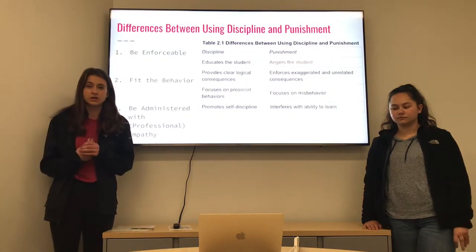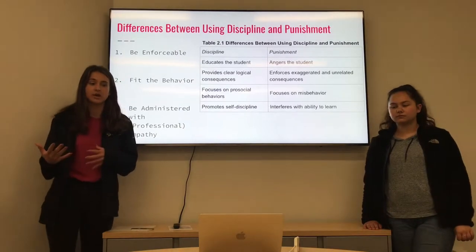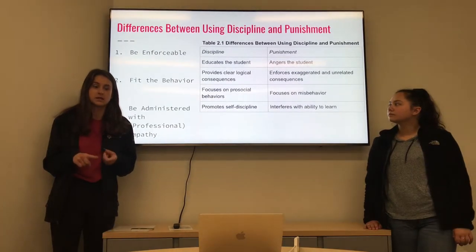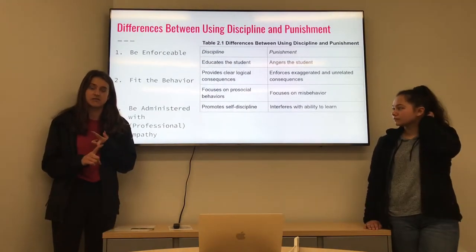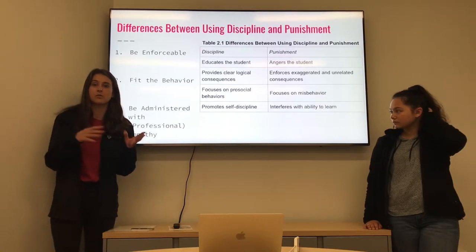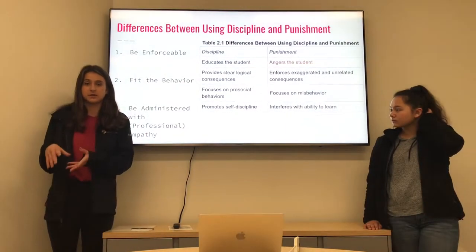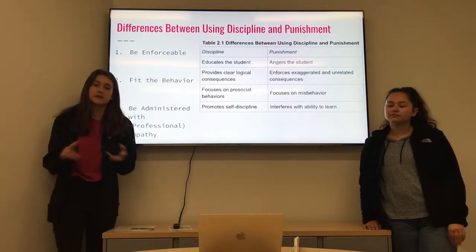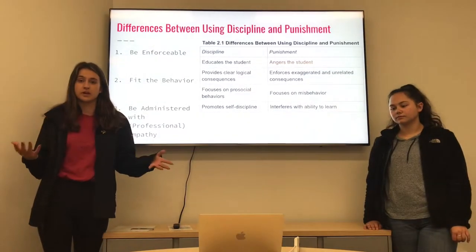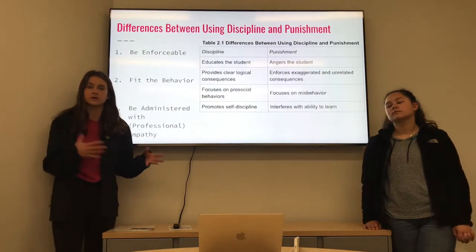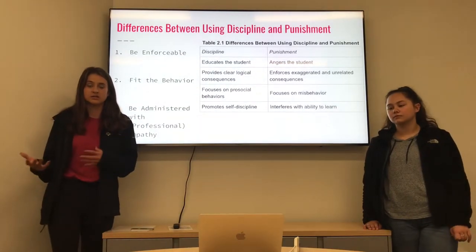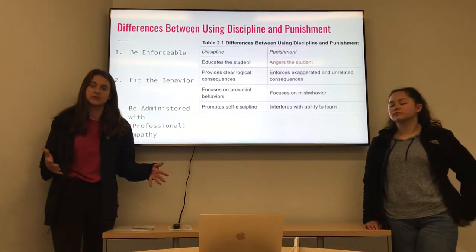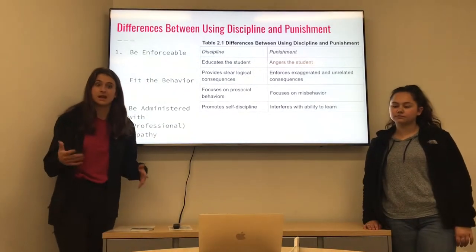There are three things to focus on to lean more toward discipline rather than punishment. The first is to be enforceable, meaning being consistent with your consequences. The second is to fit the behavior — if something goes wrong in a specific area, the discipline should relate to that area. The third is administering professional empathy: professional empathy applies more to teachers, while straight empathy applies more to parents or supporters. This empathy builds trust to keep positive discipline consistent and continuing.